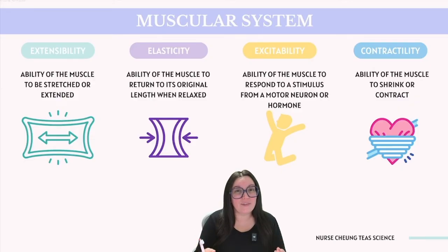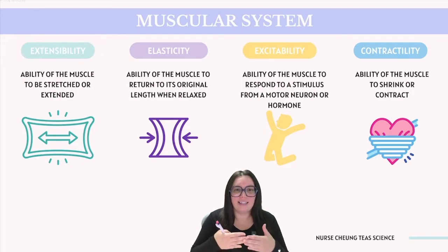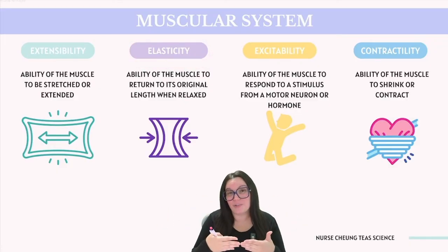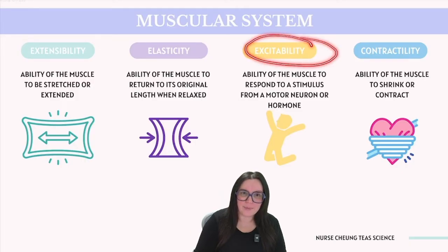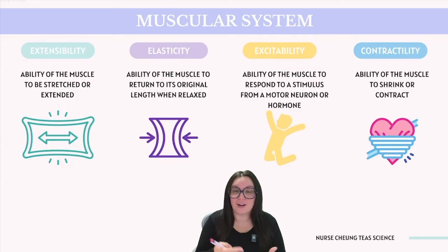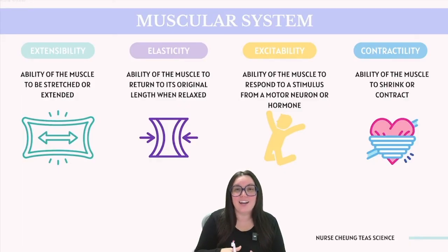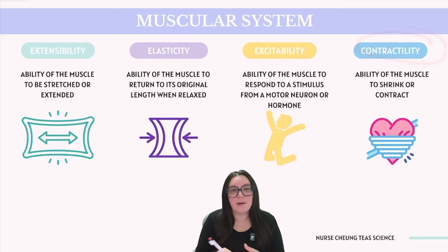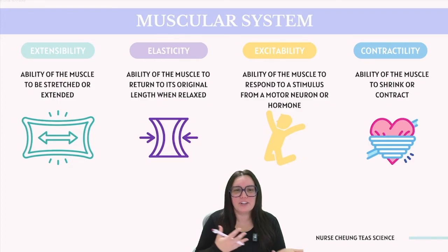All muscle tissues share several key characteristics worth noting. They possess extensibility, meaning that they can stretch or extend, and they have elasticity, meaning that they can return back to their original form after being stretched. Muscle tissue can also exhibit excitability, which refers to the cell's ability to respond to stimuli. In muscle tissues, this allows their membranes to undergo electrical changes and transmit action potentials. Additionally, muscle tissues are capable of contracting, a property known as contractility. The mechanism of contraction varies among the three different kinds of muscle tissues.